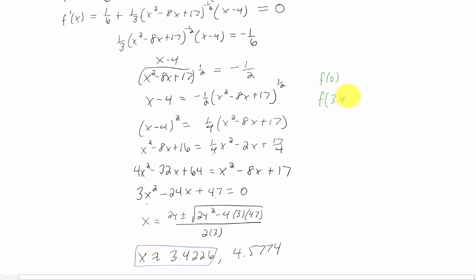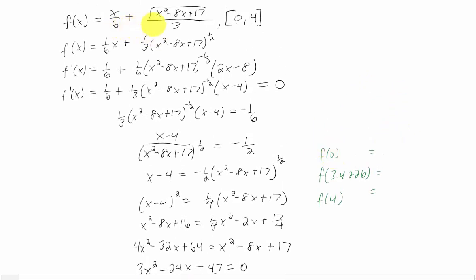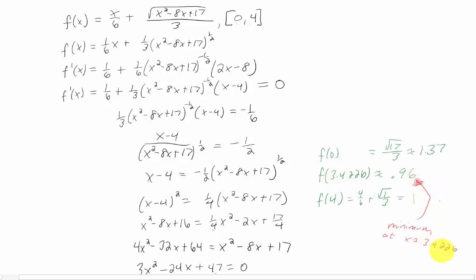Plugging x = 0 into our original function gives 0 plus the square root of 17 divided by 3, which is approximately 1.37 hours. Plugging in x = 3.4226 gives approximately 0.96 hours — less time, good. Plugging in x = 4 gives 4/6 plus the square root of 1/3, which simplifies to 2/3 plus 1/3, exactly 1 hour. So the minimum time occurs when we run approximately 3.4226 miles down the shore, then hop in the water and swim.